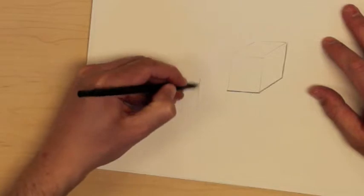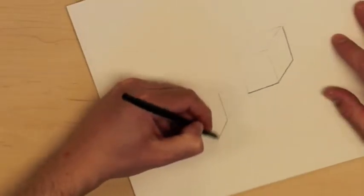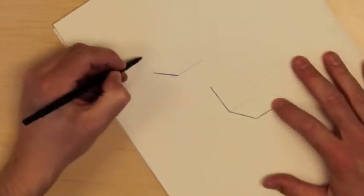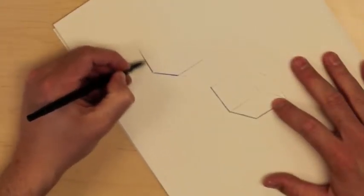And then come back and kind of darken this in. Maybe I'll make that a medium line weight, and then really kind of go over this a couple of times to darken it in, make it nice and thick, and accomplish a heavy line weight.